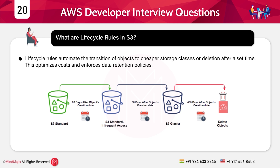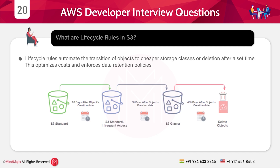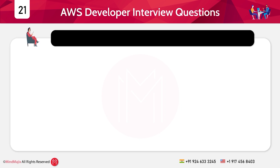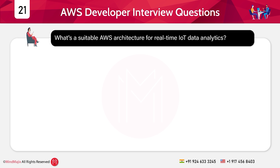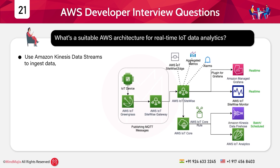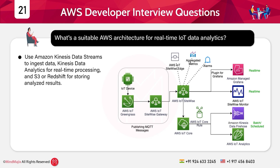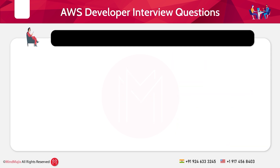Now we move to the advanced level, first category: scenario-based questions. Question 21: What is a suitable AWS architecture for real-time IoT data analytics? Answer: Use Amazon Kinesis Data Streams to ingest data, Kinesis Data Analytics for real-time processing, and S3 or Redshift for storing analyzed results. This pipeline supports low-latency analytics.